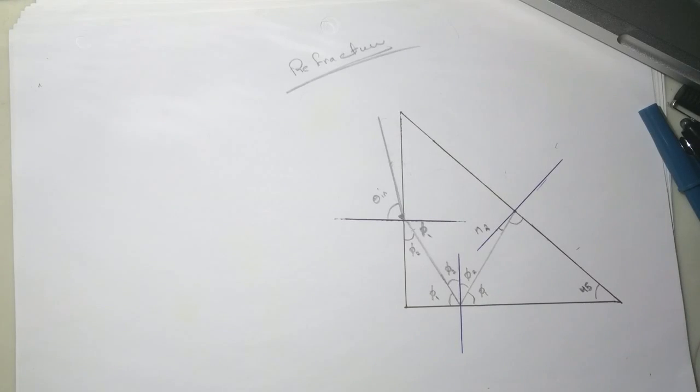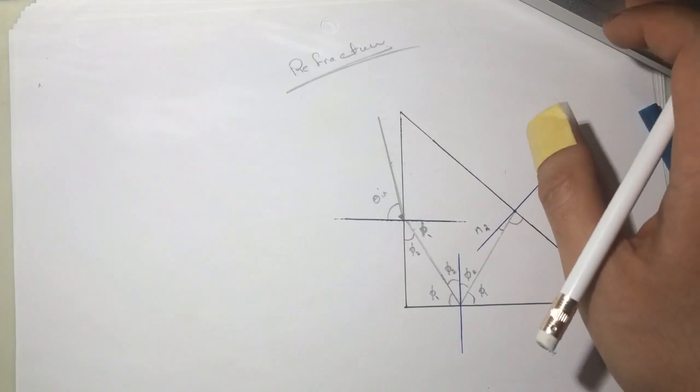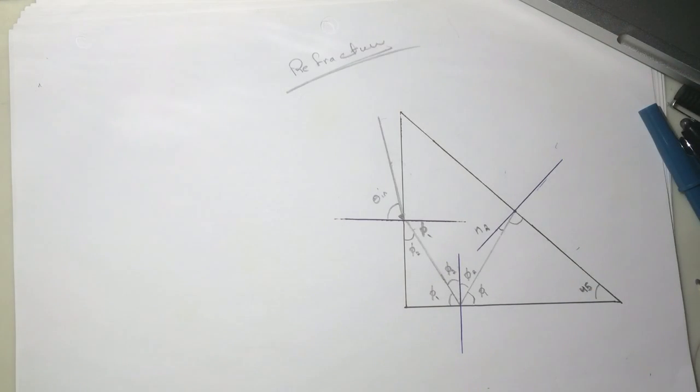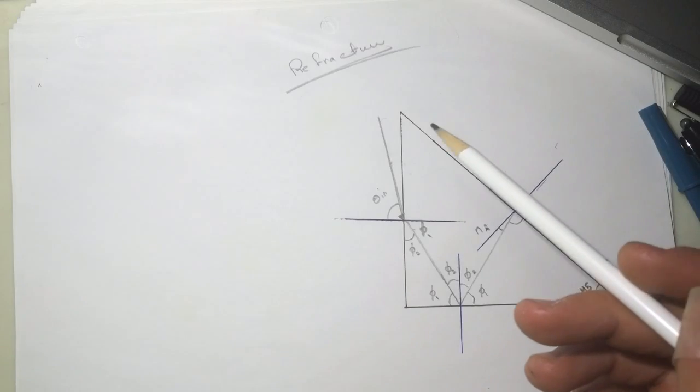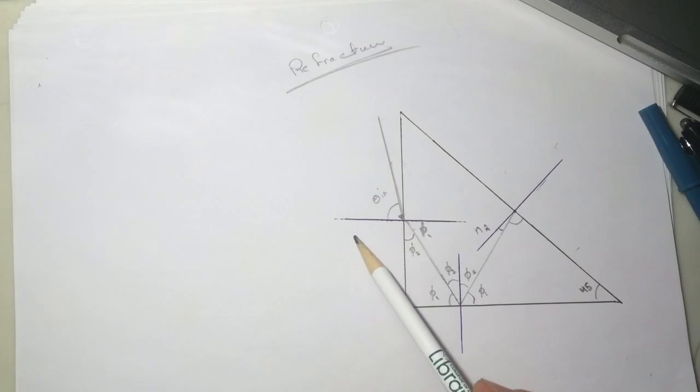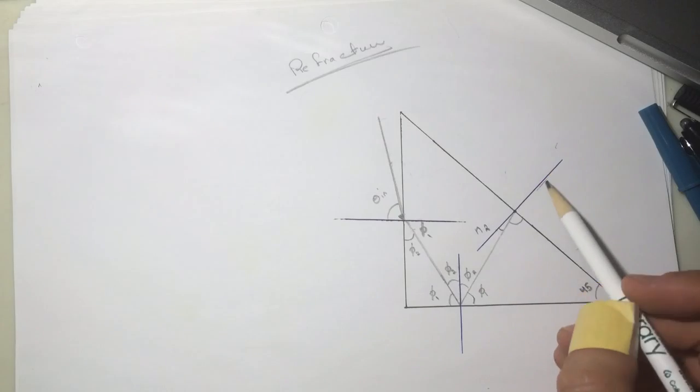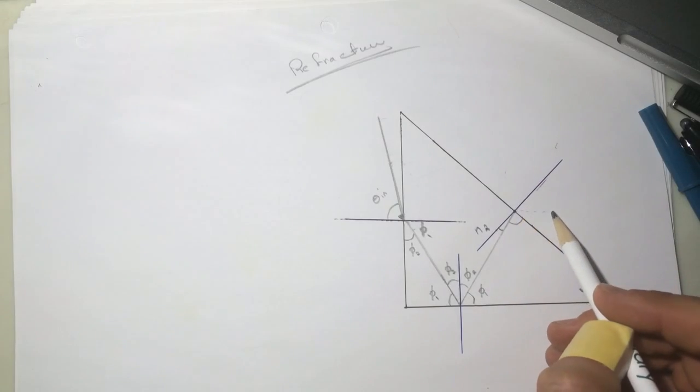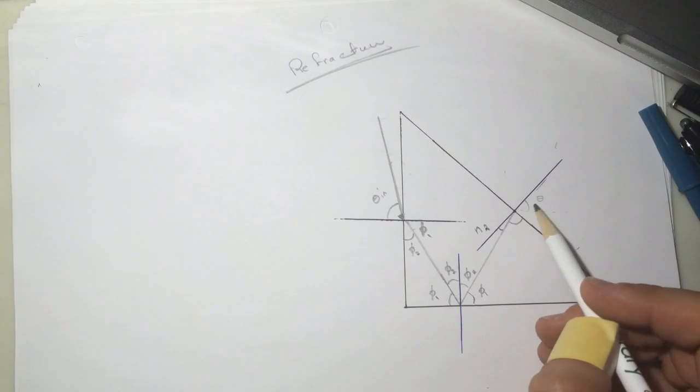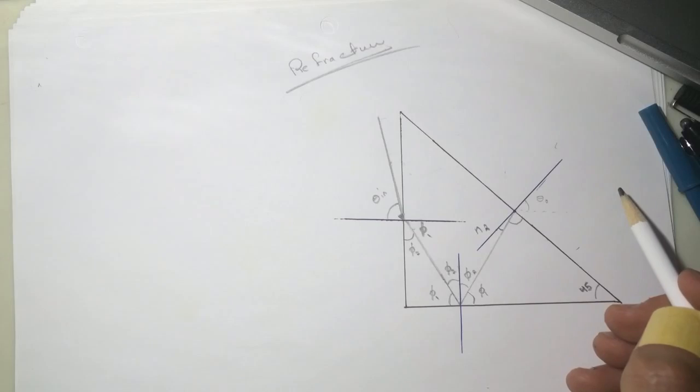Hi guys, this is the refraction problem. We have this light that is coming with an angle and it refracted and reflected inside, so we need to find what is this angle here - theta out.